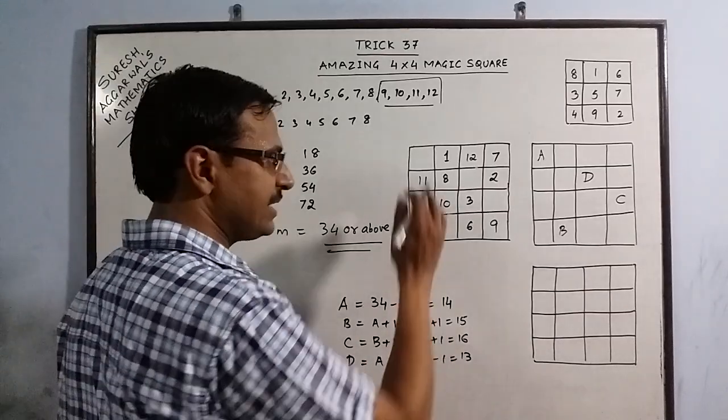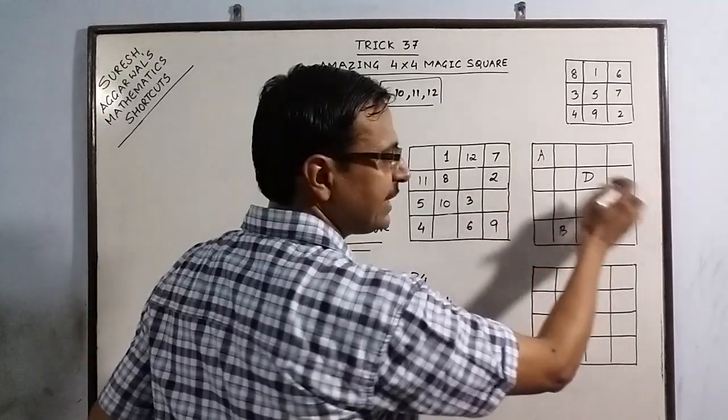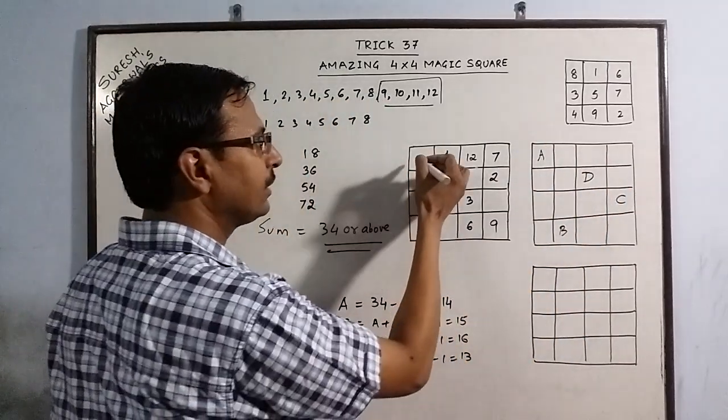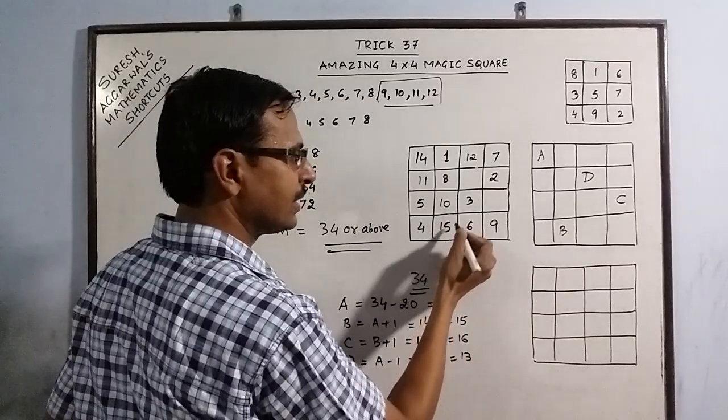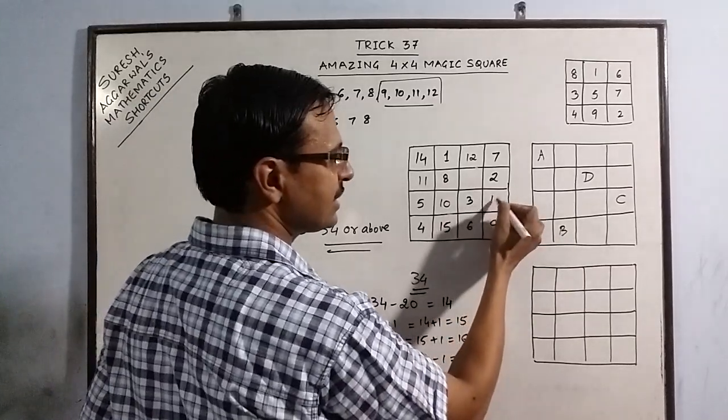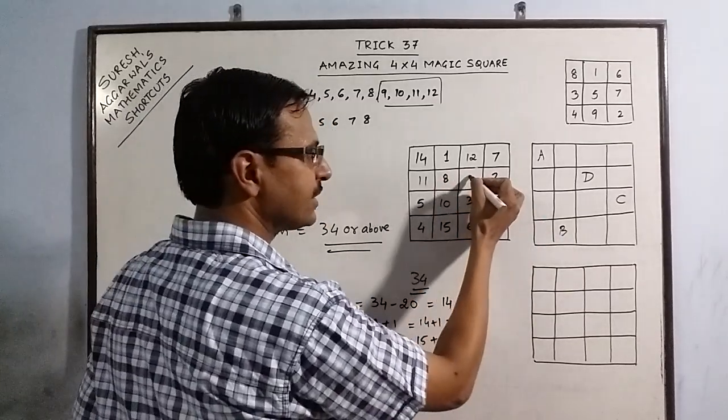Now, I have got all the remaining 4 digits. So, I will leave these as per A, B, C, D as labeled in this. So, A is 14. B is 15. C is 16. And D is 13.